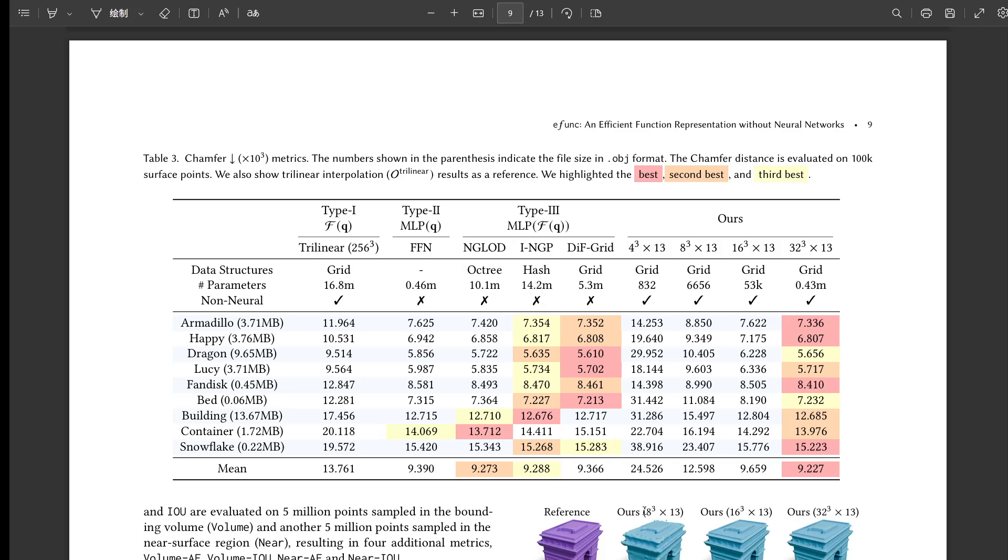That makes sense. More transparent math, easier derivatives. Right. And the paper shows some other cool applications that leverage this structure and maybe interpretability. Figure 12 does a frequency decomposition, showing how it captures different detail levels. And figure 14 is really neat: intuitive shape manipulation. Because the parameters live on this regular grid, you can do simple operations directly on those grid parameters. Like they show taking the parameters from half of one shape's grid and half of another's grid and just combining them to blend the shapes. Oh, wow. So you can directly edit the representation in a spatial way. Kind of. Yeah. It gives you a level of direct control that's often much harder with abstract neural network weights. You're manipulating something that feels closer to the object's actual structure. That sounds really powerful for artists or designers. It could be.